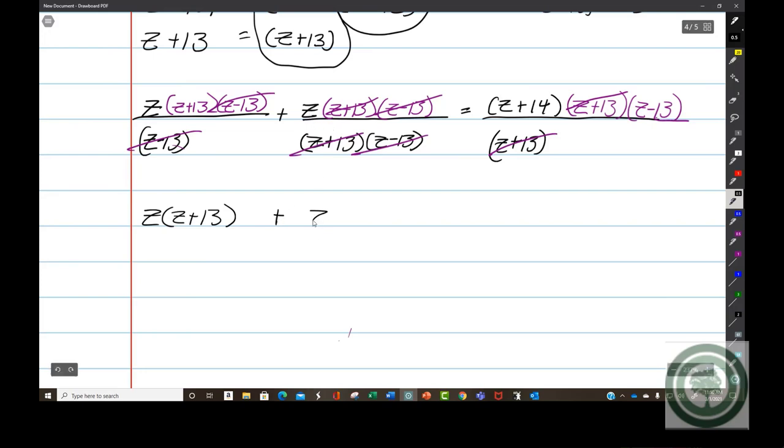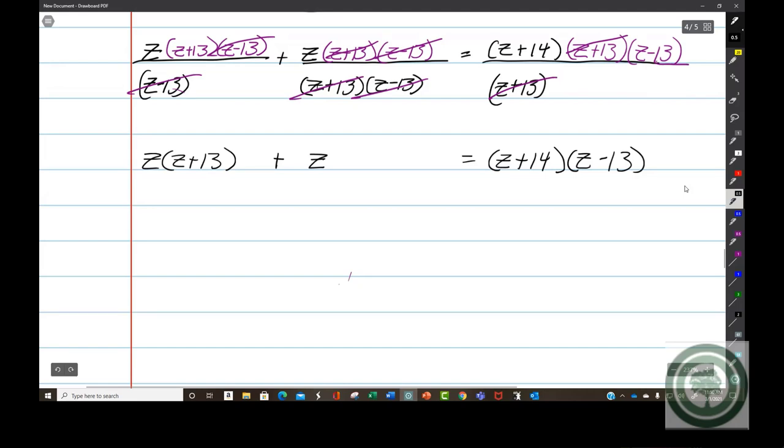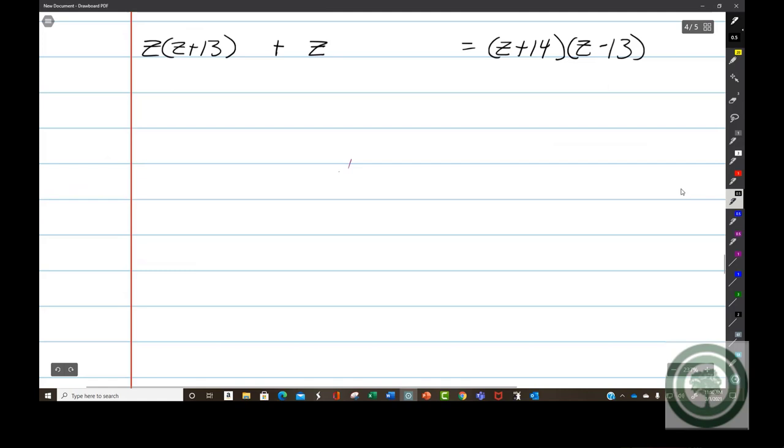I have a z and a z plus 13. Here I only have a z. Over here I have a z plus 14 times a z minus 13. Now I don't have any fractions, which makes all of this somewhat easier on me. I'm going to have z squared plus 13z plus z equals—we're going to do that little thing—which will give me z squared minus 13z plus 14z minus 13 times 14.